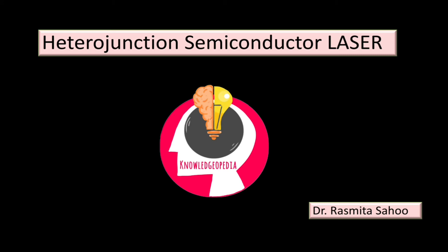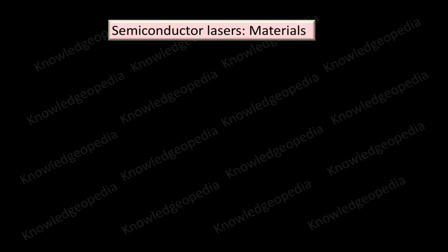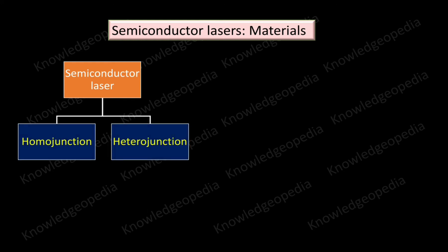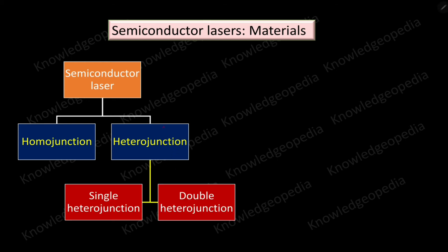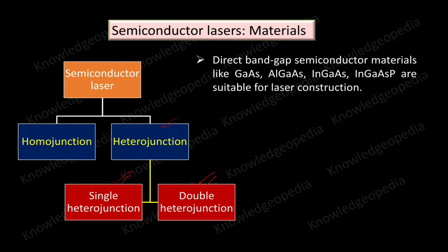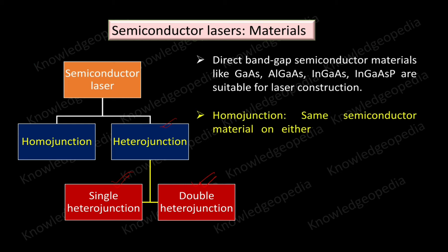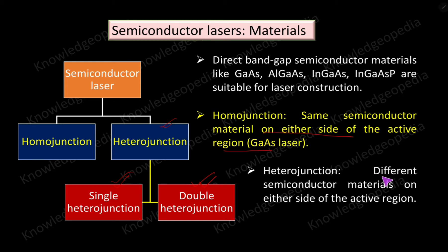Hello students, today we will be discussing about heterojunction semiconductor laser. In the previous video we have seen what is a semiconductor laser and what are the different types. Semiconductor lasers are of two types: homojunction semiconductor laser and heterojunction semiconductor laser. Further, heterojunction semiconductor laser is of two types: single heterojunction and double heterojunction. Direct bandgap semiconductor materials are suitable for laser construction. In homojunction, we have the same semiconductor material on either side of the active region, but in heterojunction there are different semiconductor materials on either side of the active region.